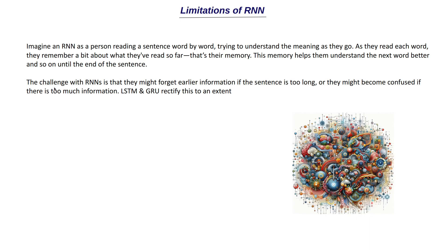The problem with RNNs is that they can forget earlier information if the sentence is too long, or become confused if there is too much information. As it learns word by word, the memory can fade when processing long paragraphs. Variations like LSTM (Long Short-Term Memory) and GRU were developed to address this, but only to a limited extent. Transformers work differently by using positional encodings and self-attention to process the entire sentence at once.